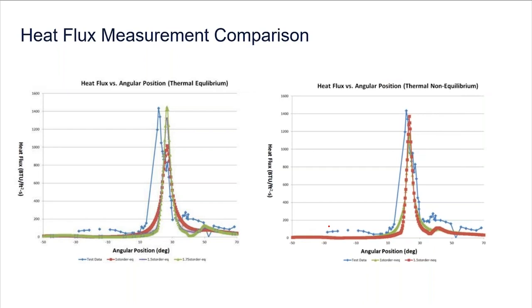This heat flux comparison shows what you get with thermal non-equilibrium versus the default thermal equilibrium. When you assume thermal equilibrium, you can capture the peak heat flux but tend to get the peak in the wrong location. The benefit of turning on thermal non-equilibrium for a case like this is it gets the heat transfer much closer to the experimental result.